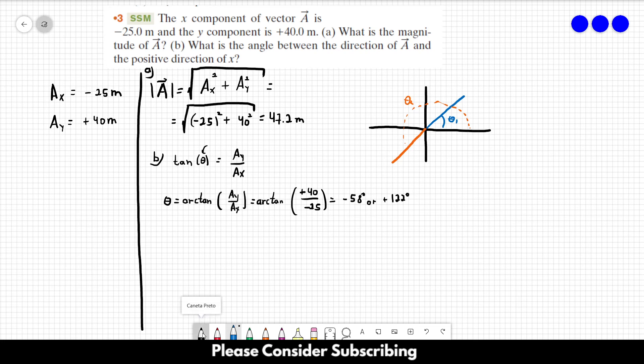So, let's kind of draw this vector over here. Vector A. So, vector A is negative in x. So, it's something like this. And positive in y. So, something like this.